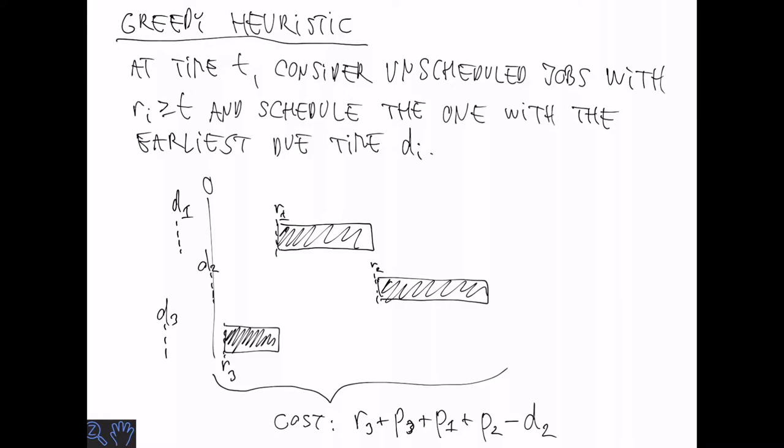So notice here that because the jobs are running without any idle time, we can express the time where job 2 finishes as the starting time for job 3, which is the time where we started processing the jobs, plus the sum of the processing times for p1, p2, and p3.